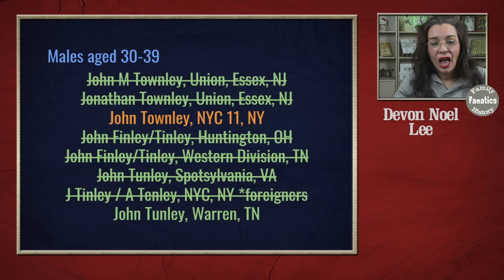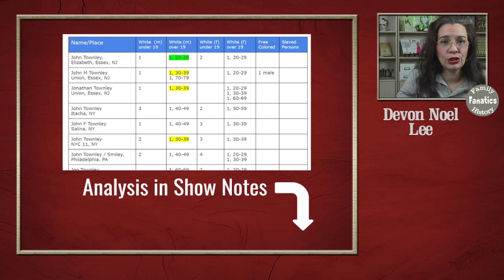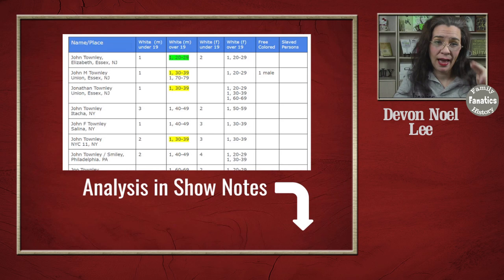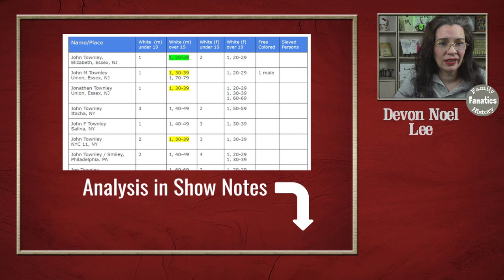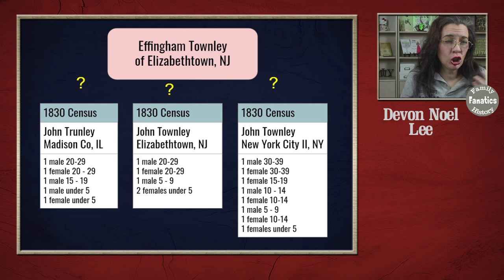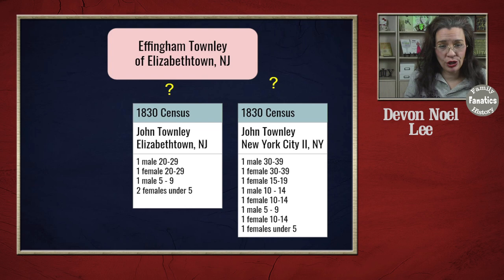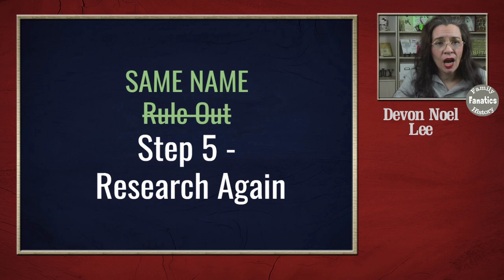I went through my research notes — connected to the show notes on the blog — and filtered everybody down until I basically have two possibilities. If you want to see all of the reasons why I excluded the people on the list, be sure to go check out the link in the description to the show notes. Now I have two possibilities: John in New York City's 11th Ward, and John in Elizabethtown, New Jersey.